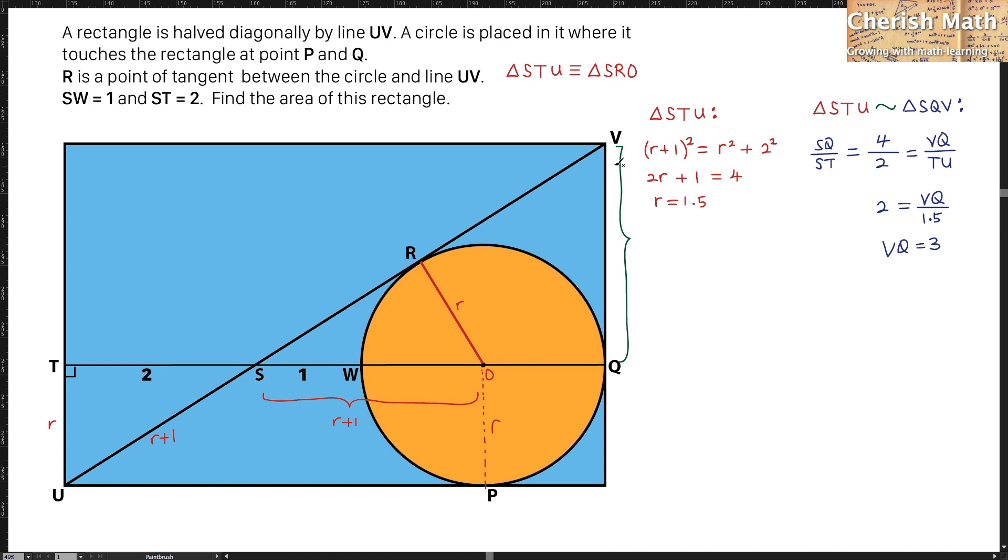Let's fill up the measurements here. VQ is 3, and this length is the same as the radius of the circle, which is 1.5. For this horizontal length of this rectangle, that would be 2 plus r plus 1 plus r. The result I'm getting here by filling up r with the value of 1.5, this is 6.